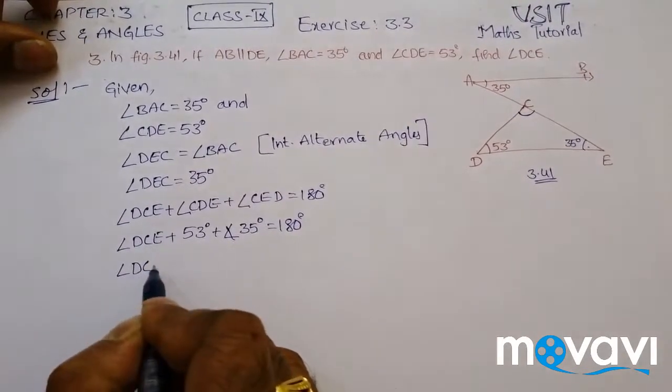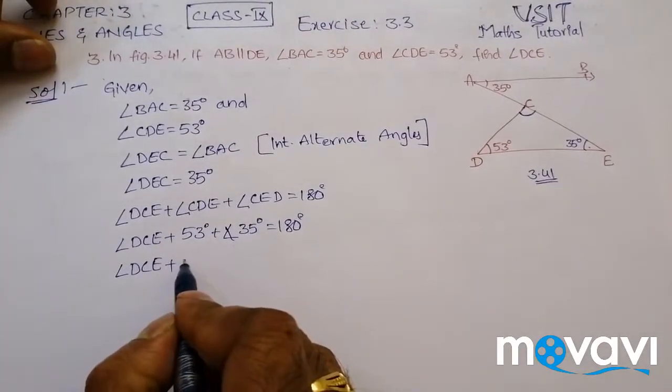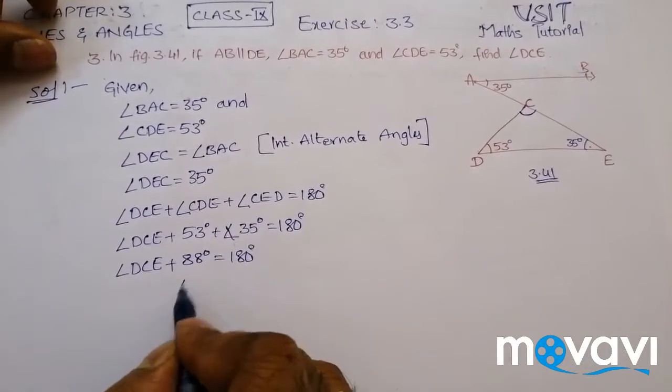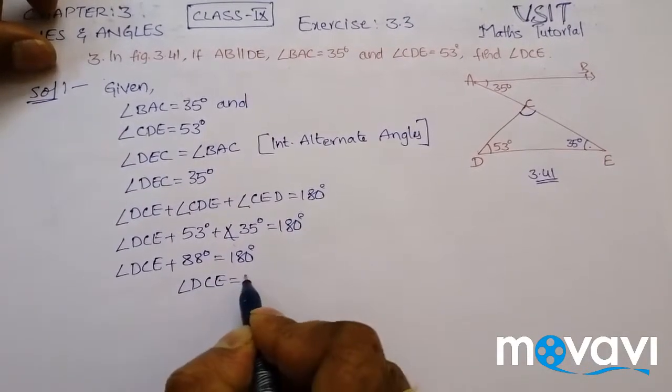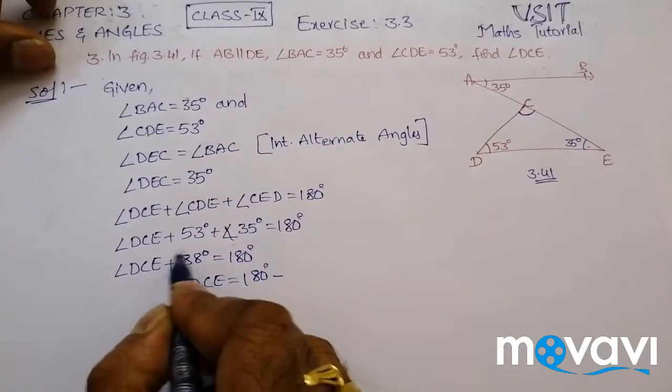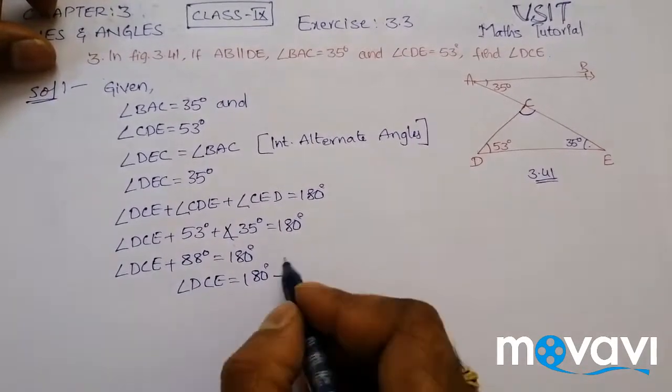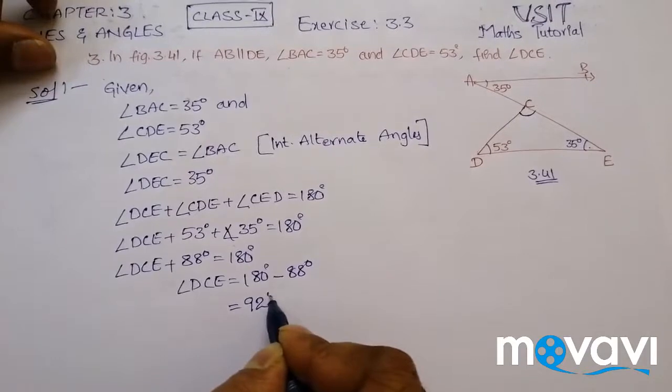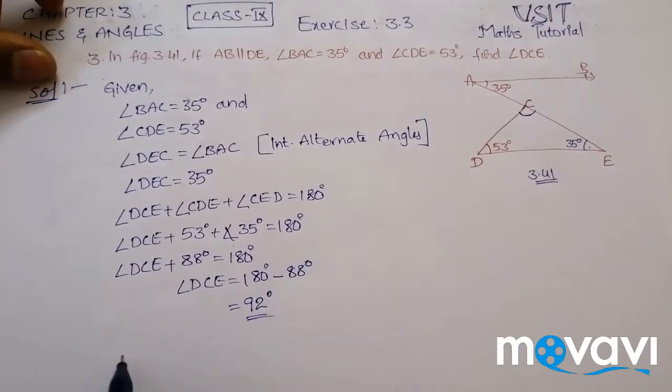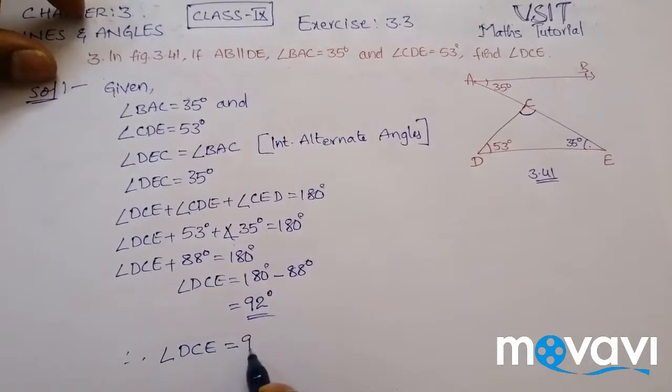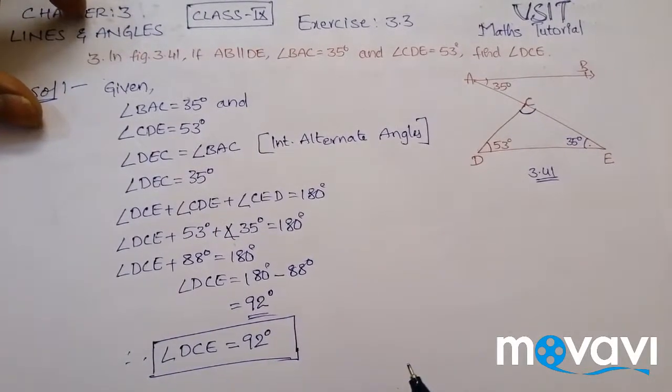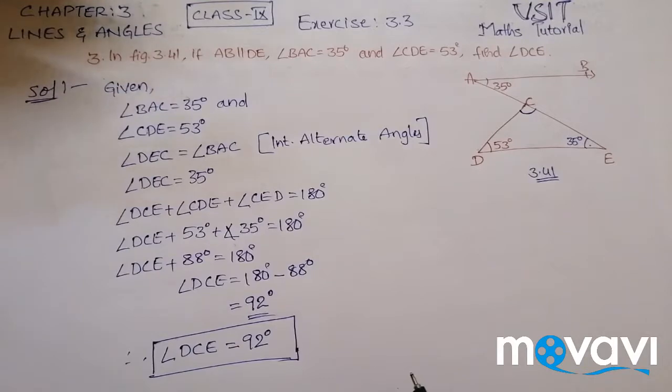And angle DEC is equal to 35 degrees. So angle DCE is equal to 180 degrees minus 88, which is equal to 92 degrees. Therefore angle DCE is equal to 92 degrees. This is the procedure to solve the given problem.